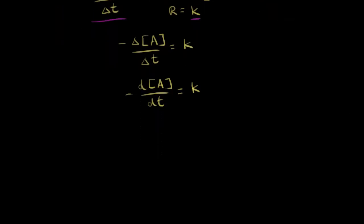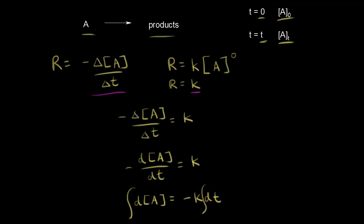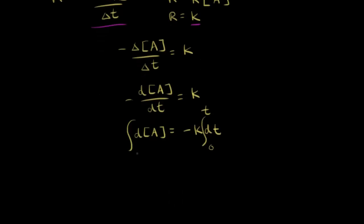We're going to multiply both sides by negative dt. So we have dA on the left side and negative K dt on the right side, and we're ready to integrate. We integrate on the left, and K is a constant so we can pull it out of our integral on the right. We go from time equal to zero to time equal to t, and from our initial concentration to our concentration at time t. So we plug those in.